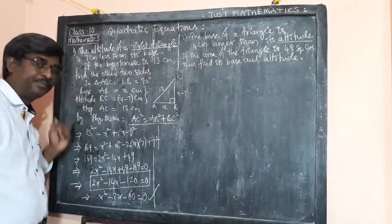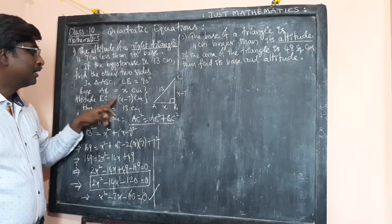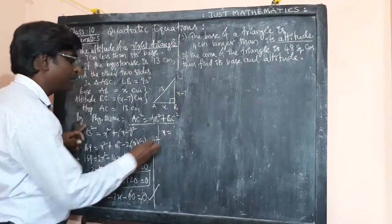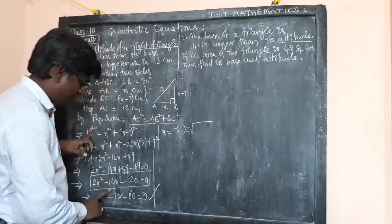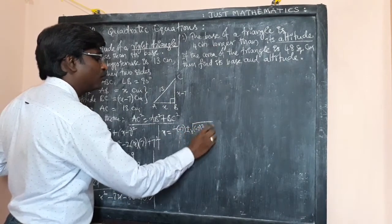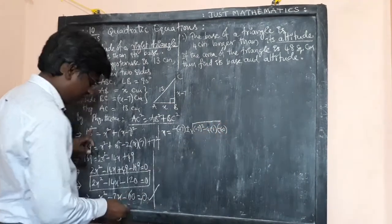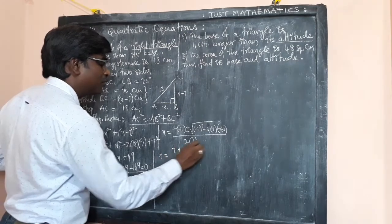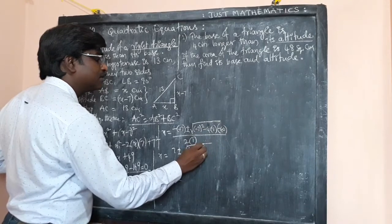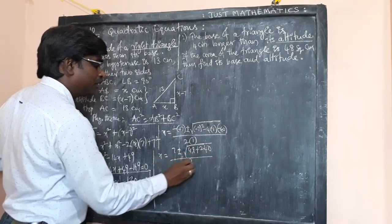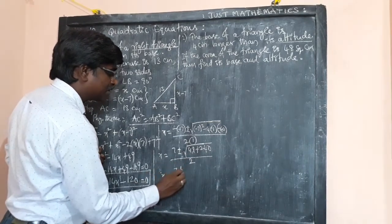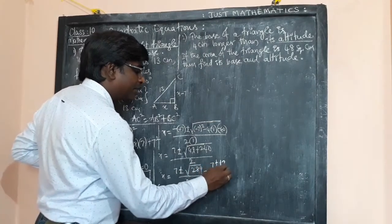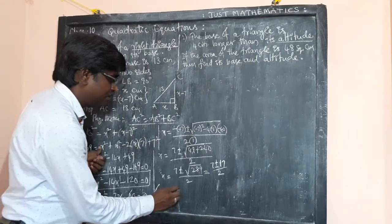Now we solve this quadratic to get x, where x represents the base and x minus 7 represents the altitude. Using the quadratic formula, x = [minus b plus or minus square root of b² minus 4ac] divided by 2a. Here b = minus 14, so minus b = 14; b² = 196; 4ac = 4 × 1 × minus 60 = minus 240. This simplifies to x = 7 plus or minus square root of 289, all divided by 2. Since the square root of 289 is 17, we get x = (7 plus or minus 17) divided by 2.